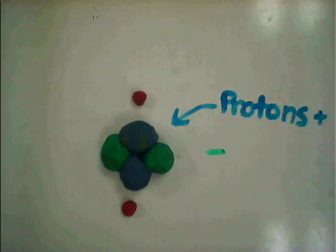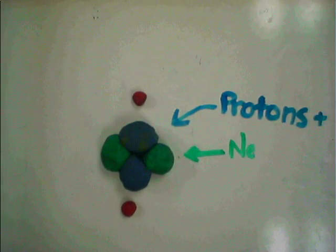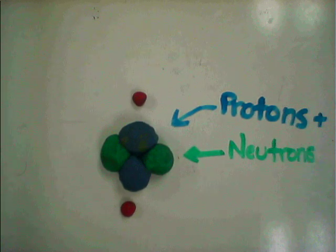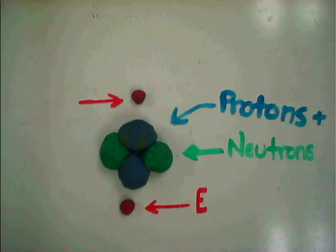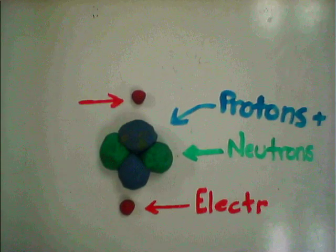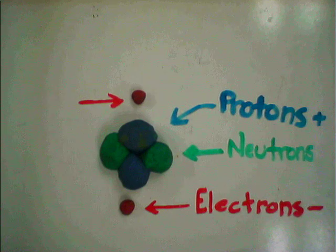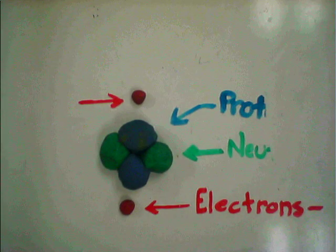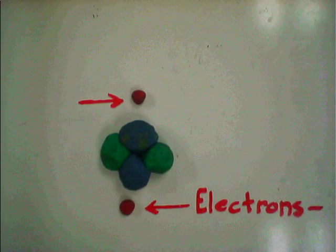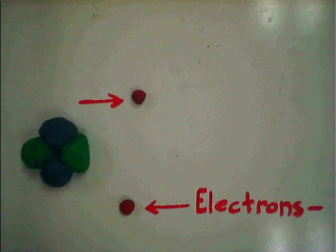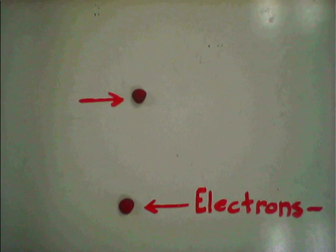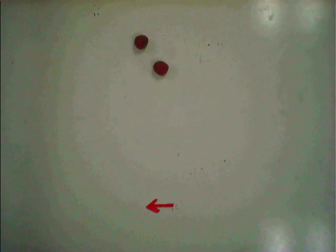All atoms have a nucleus made of positively charged protons, neutrons with no charge, and then there are electrons, which have a negative charge, orbiting the nucleus. For right now, we're going to focus on the electrons.